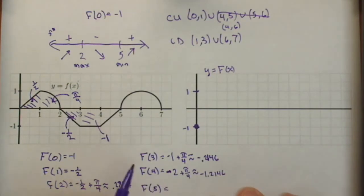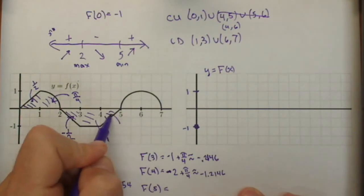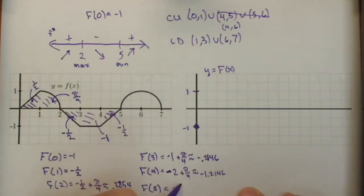f of 5. We are still moving in the negative direction. And again, this time it's by negative 1 half. So now we have negative 5 halves plus pi over 4. Which is a decimal is negative 1.7146.